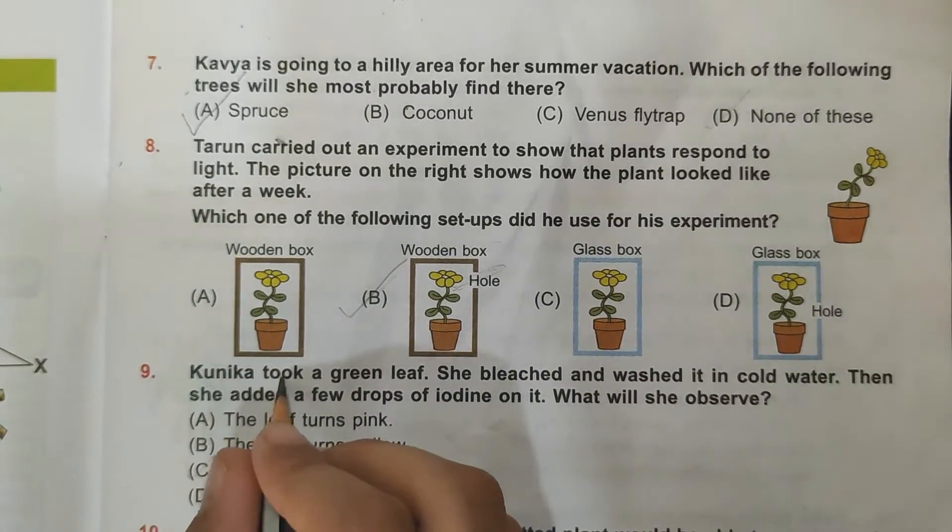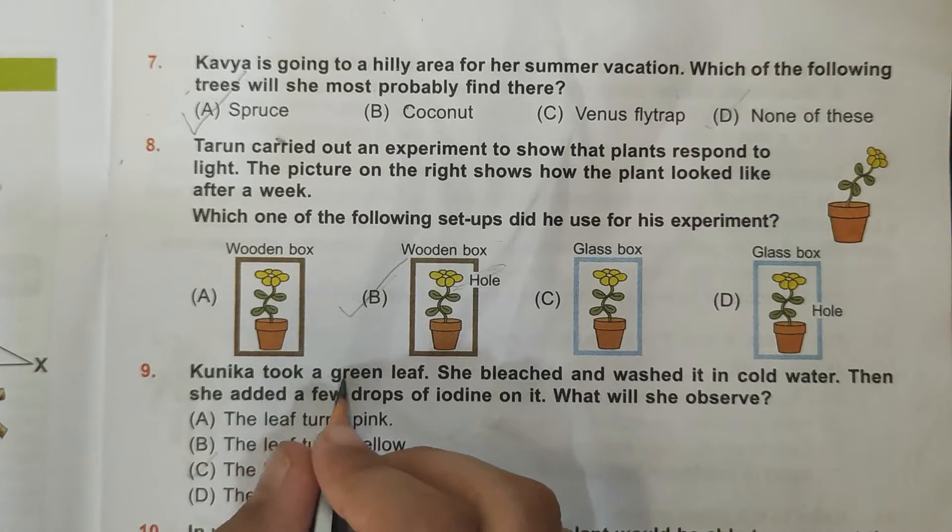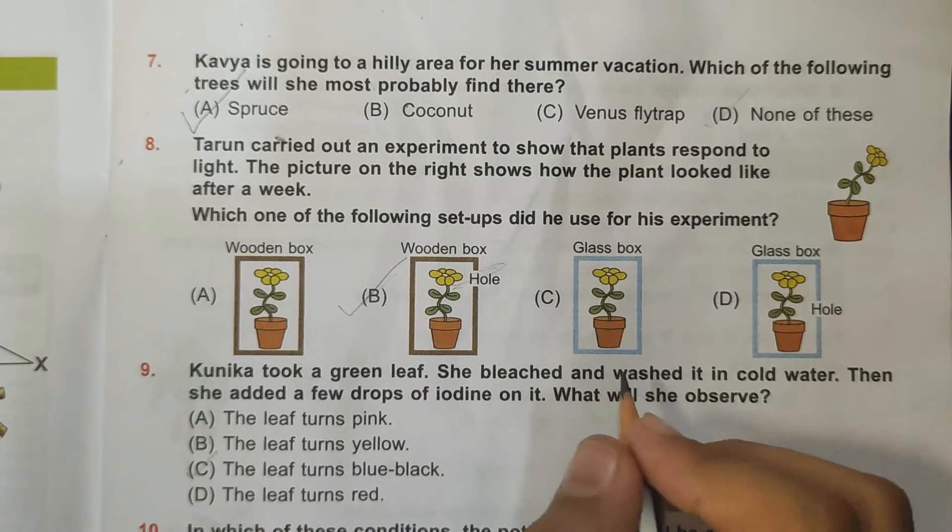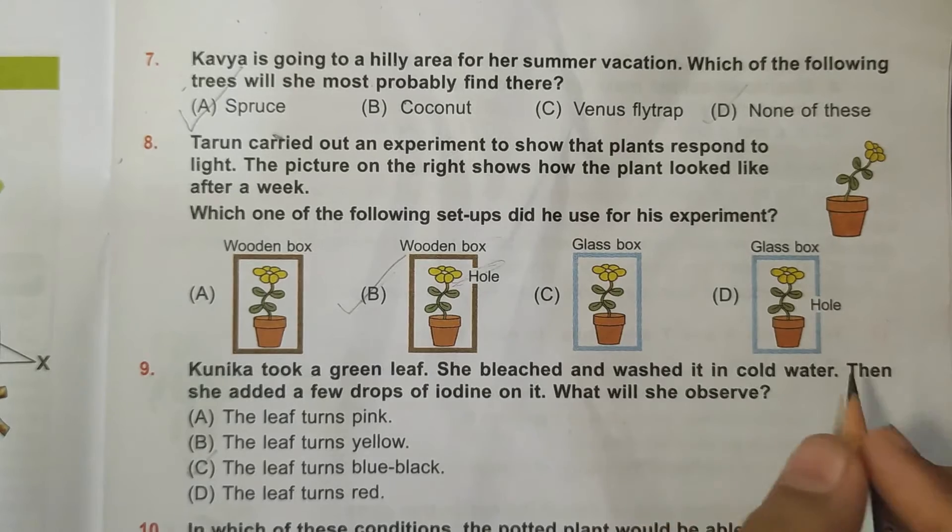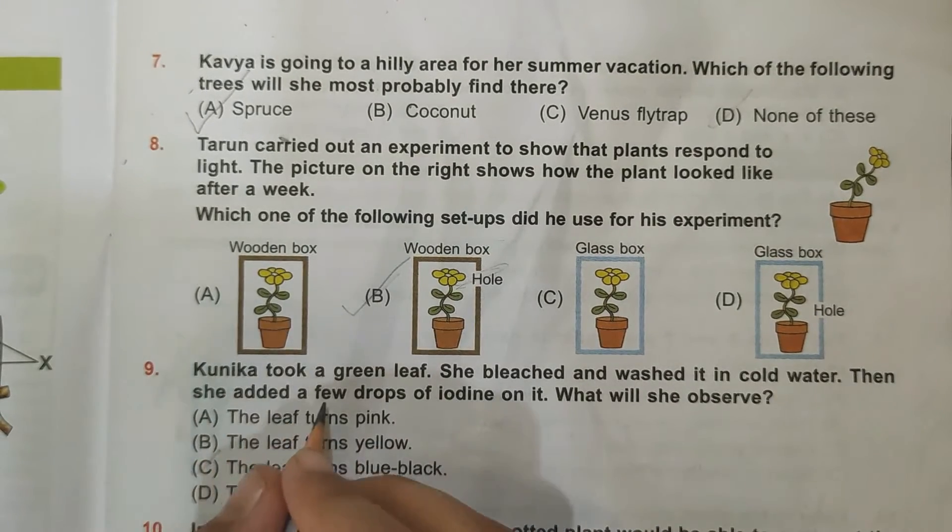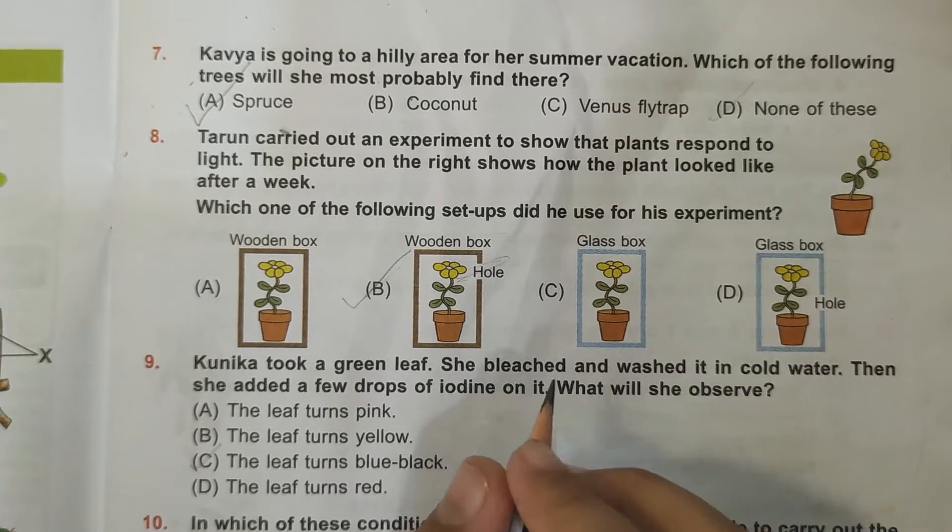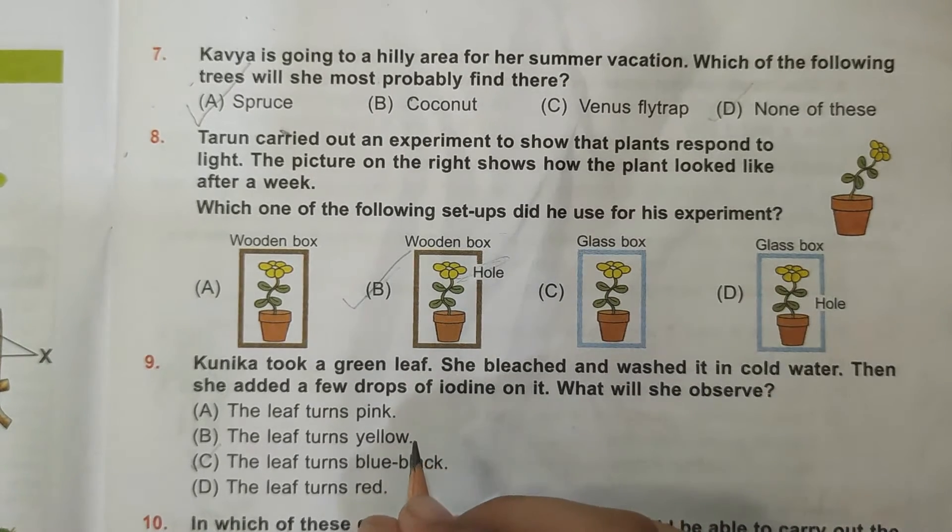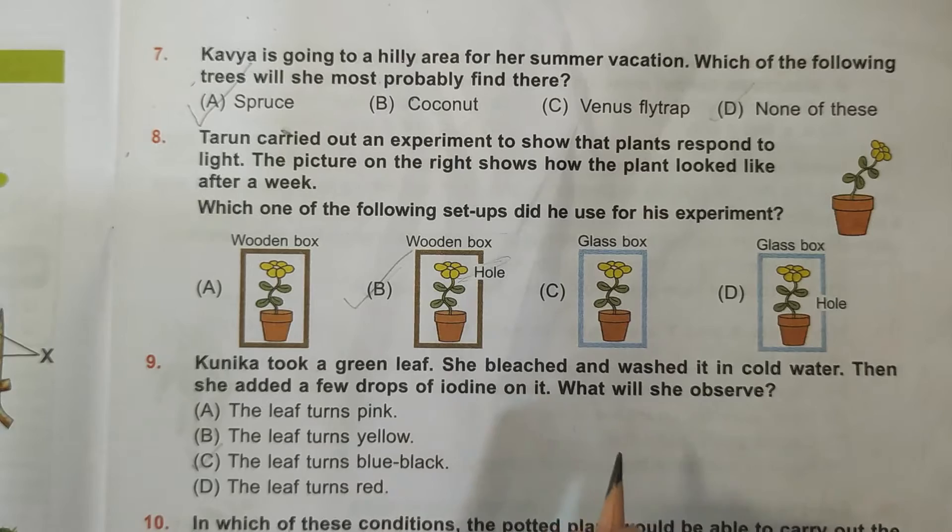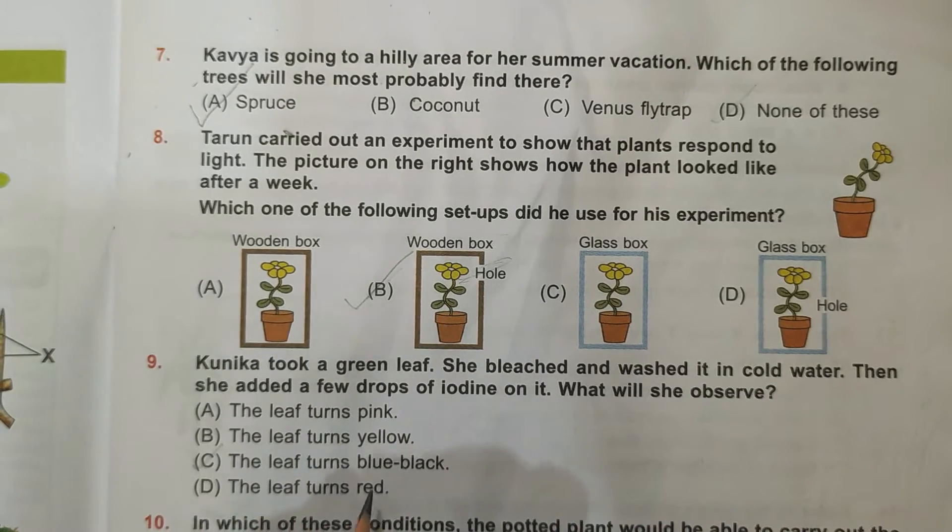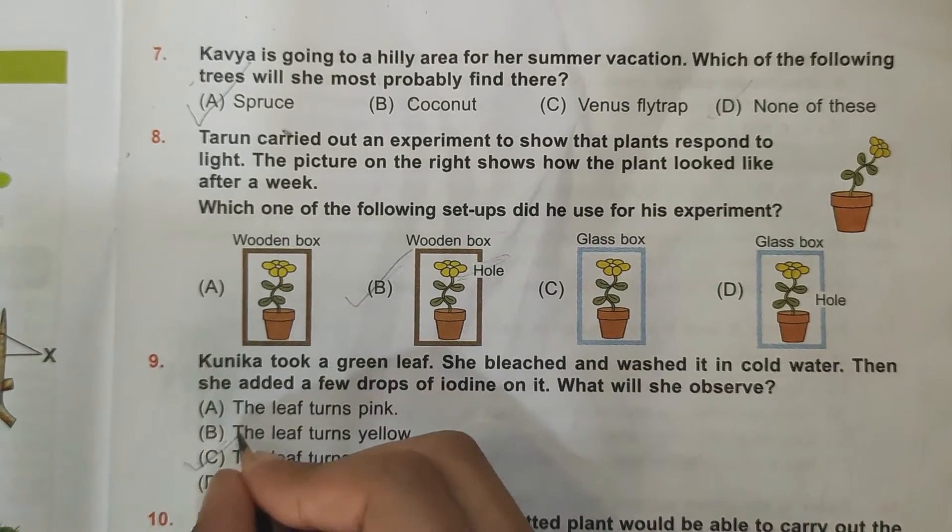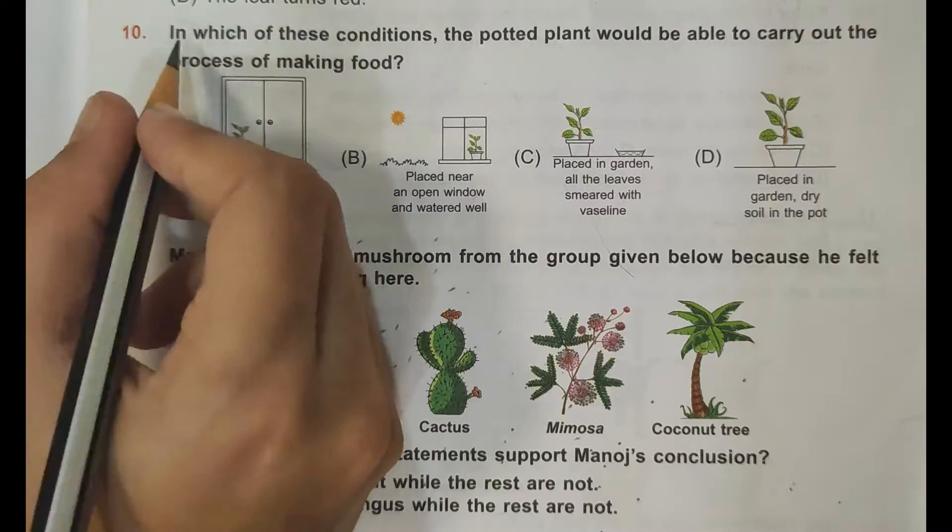Ninth question: Kunika took only a green leaf, she bleached and washed it in cold water, then she added a few drops of iodine on it. What will she observe? A green leaf in the presence of iodine will turn into blue-black color, so C is the correct answer.